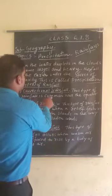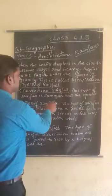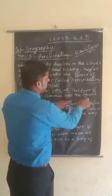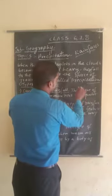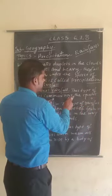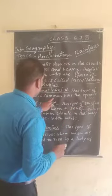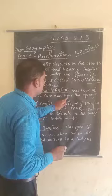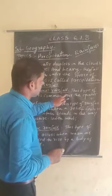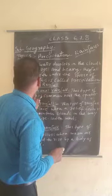The first is convectional rainfall. This type of rainfall is common near the equator. The equator is a very hot region, also known as 0 degrees latitude. Here the temperature becomes too warm, and tropical rainfalls also come under this category. Heavy rainfalls occur in this area.